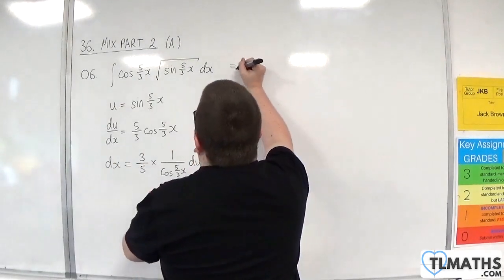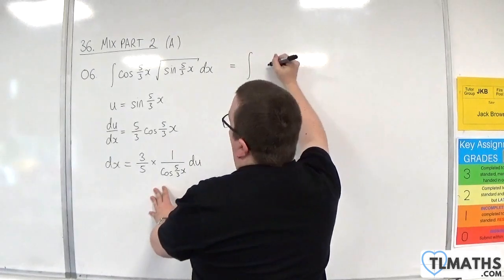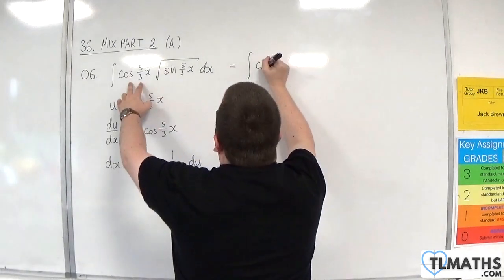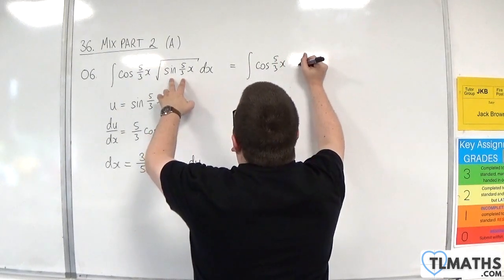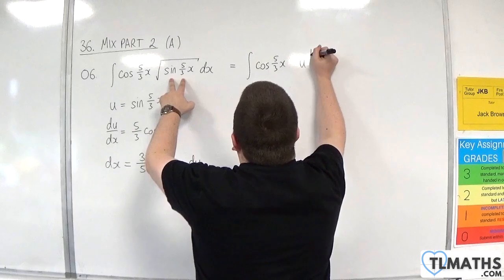Because the whole idea now is that I'll get a cancellation. So we have the integral of, we've got the cosine of 5 thirds x. We've got times by the square root of u, which I'm going to write as u to the half.